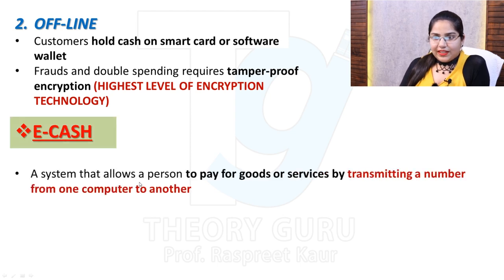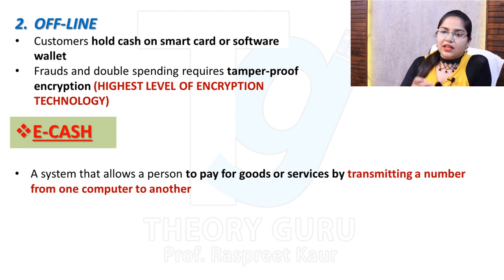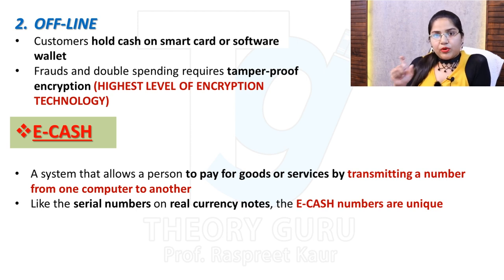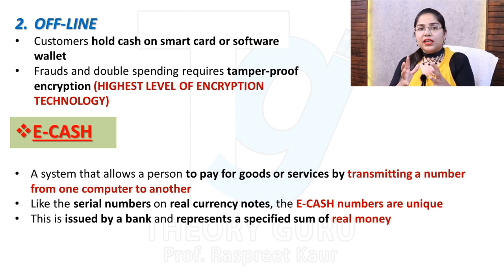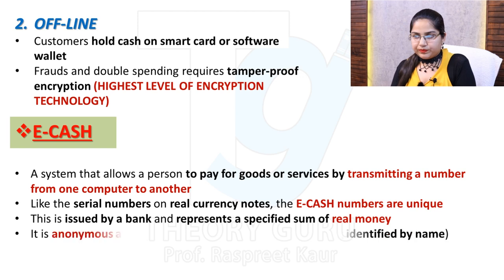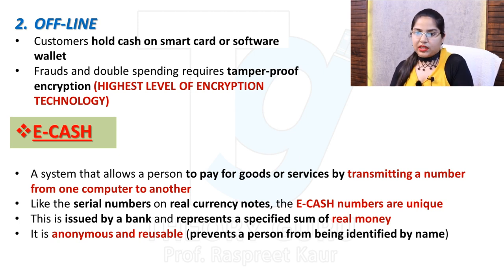Now, what do you mean by e-cash? E-cash — electronic cash — is a system which allows you to pay for goods or services by transmitting a unique number from one computer to another. Just like every physical note has a serial number, in the same way e-cash has a unique number. When you get that unique number, you can use it to complete your transaction. E-cash is issued and that number represents real money. For example, if I convert 15,000 into e-cash, my number will transmit and the card holds that value of 15,000. It is anonymous and reusable until the amount is exhausted.